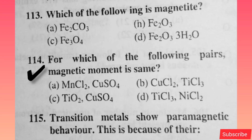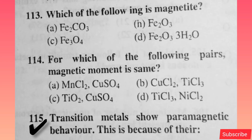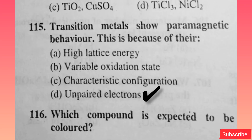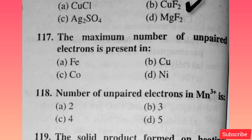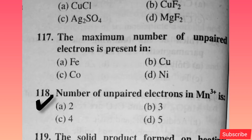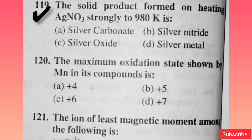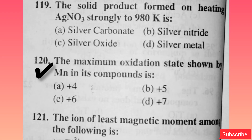For which of the following pairs is the magnetic moment the same? Option B is correct. Transition metals show paramagnetic behavior because of their — option D is correct. Which compound is expected to be colored? Option B is correct. The maximum number of unpaired electrons is present in — option A is correct. Number of unpaired electrons in Mn3+ is — option C is correct. The solid product formed on heating AgNO3 strongly to 980 K is — option D is correct. The maximum oxidation state shown by Mn in its compounds is — option D is correct.